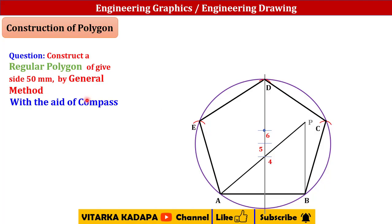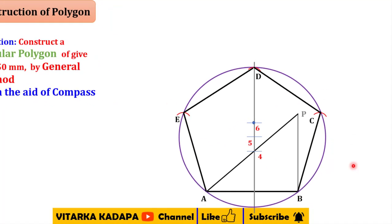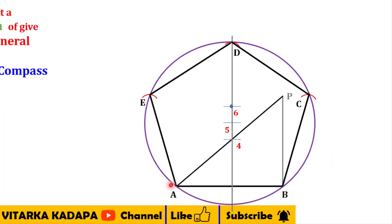In the earlier video we drew a pentagon using the generalized method, considering the side as 50mm. Now with the same procedure we are going to draw the remaining hexagon, heptagon, and octagon using the generalized method. The earlier video can be found in the link description.